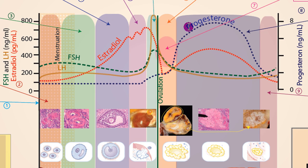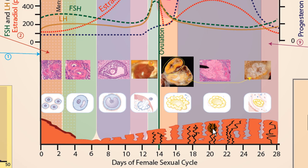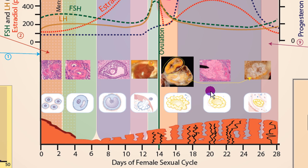Those cells release a lot of estrogen and progesterone as well. At the very bottom is a little cartoon of the changes that are going to occur in the uterine lining. Note that the timing of the development of the oocyte is perfectly timed to the development of the uterine lining. It generally takes about six to eight days after ovulation for the oocyte to actually reach the uterus, and so right after ovulation — about six to eight days — the uterine lining is at its thickest and is most ready to receive the oocyte.